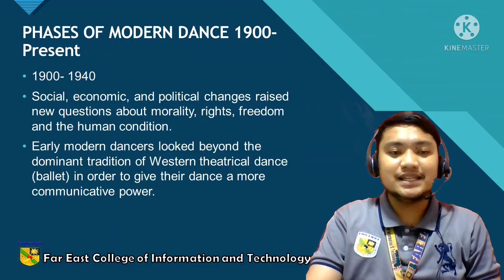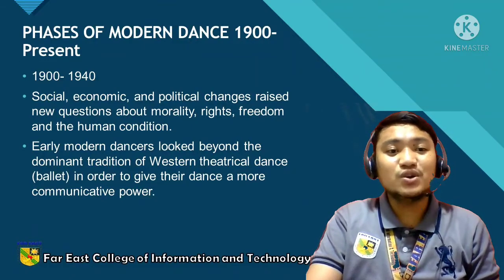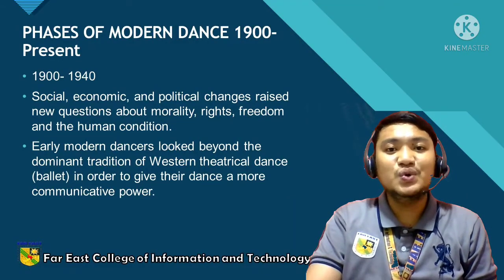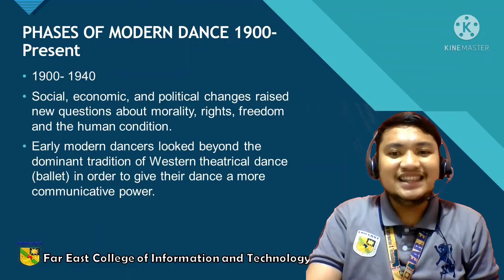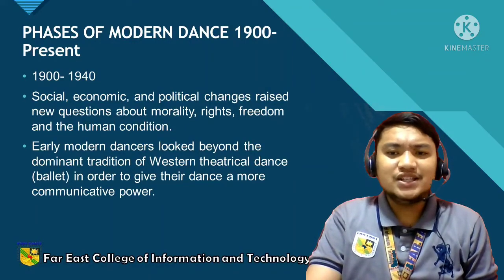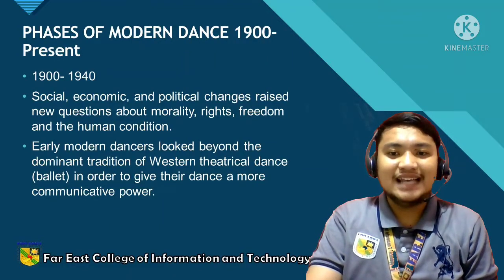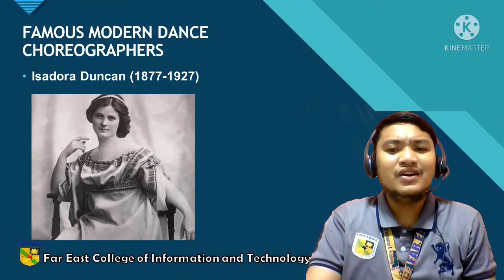Next are the phases of modern dance from the 1890s to the present. From the 1890s to 1940, socioeconomic and political changes raised new questions about morality, rights, freedom, and the human condition. This new dance was not beautiful to the accustomed patron, but beauty had not yet been defined. Early modern dancers looked beyond the dominance of Western theatrical dance tradition in order to give their dance more communicative power. They drew on archaic and exotic sources for inspiration. There was no fancy music or sensibility.